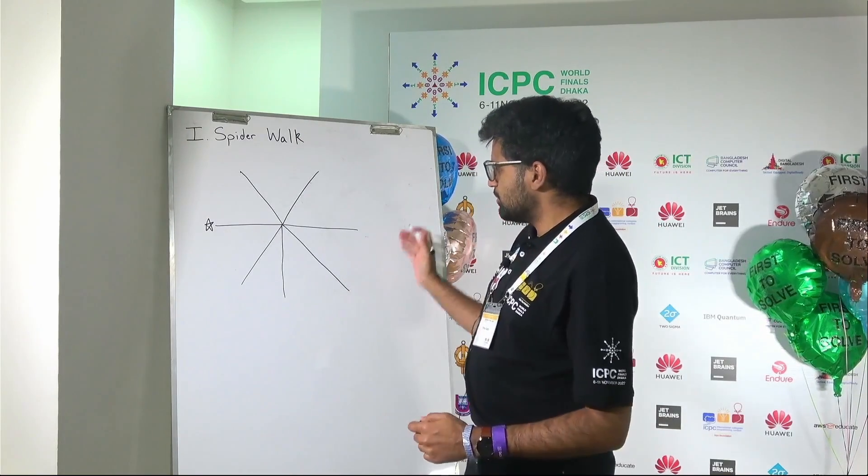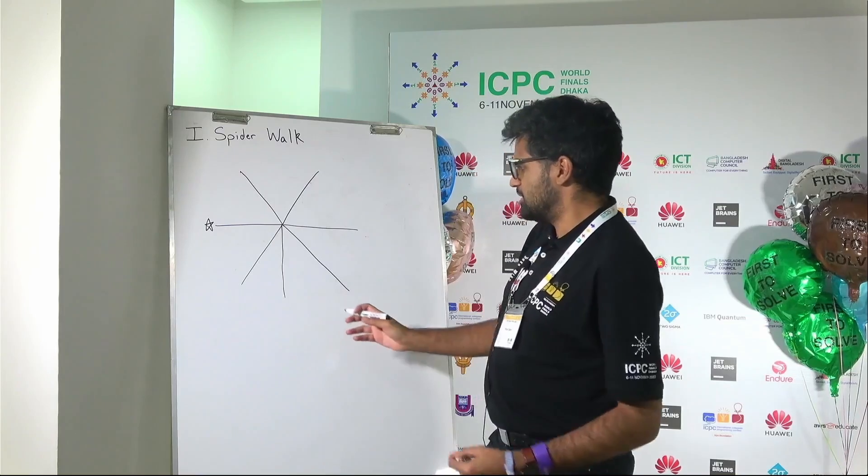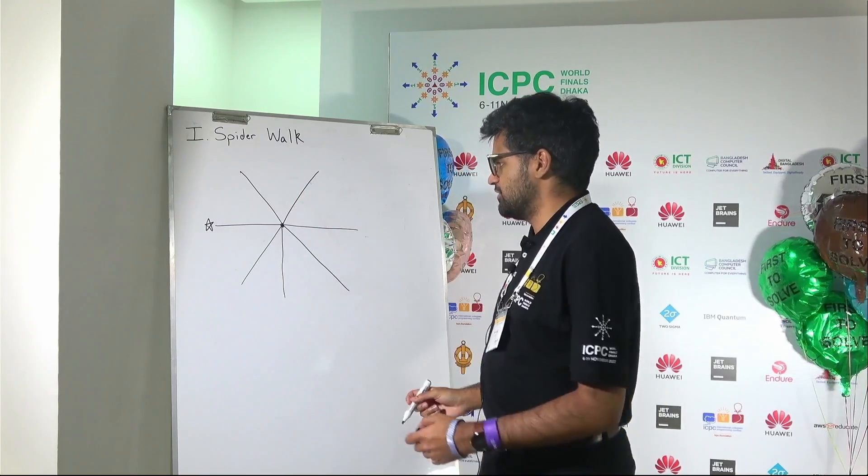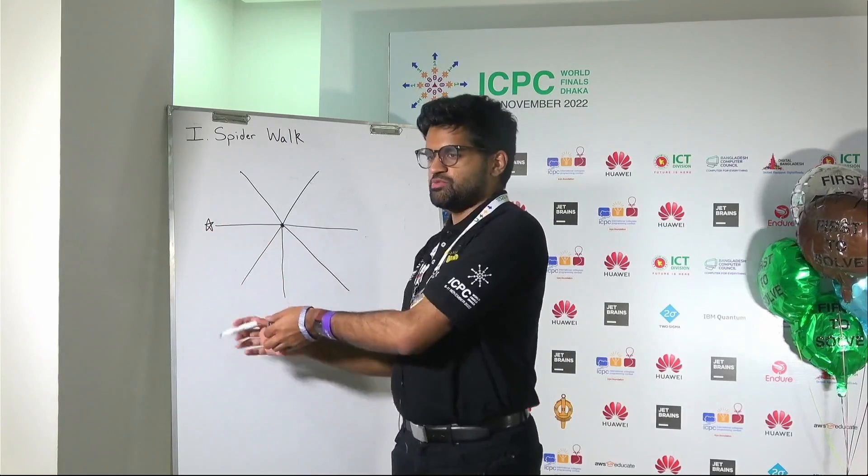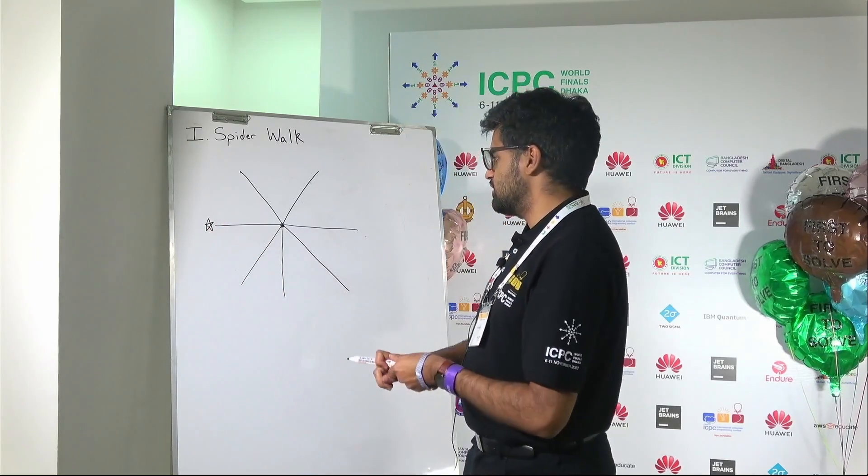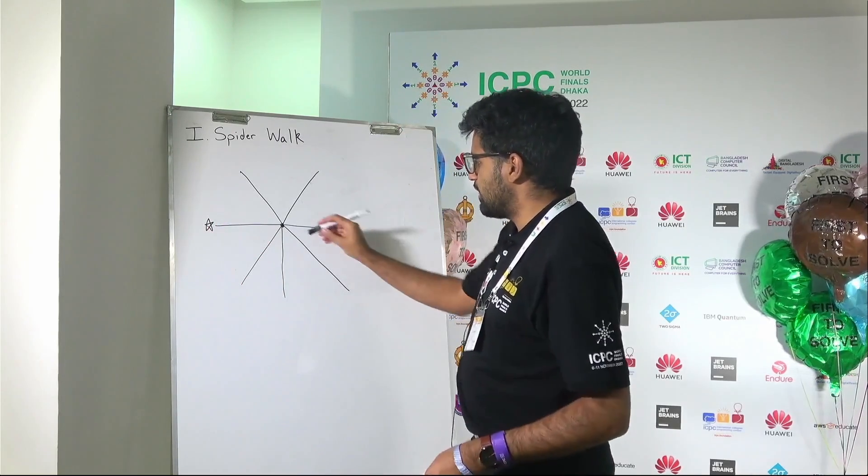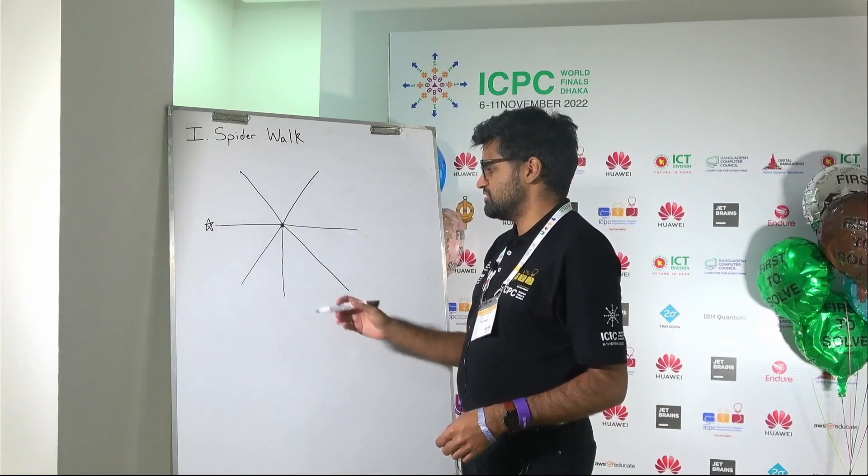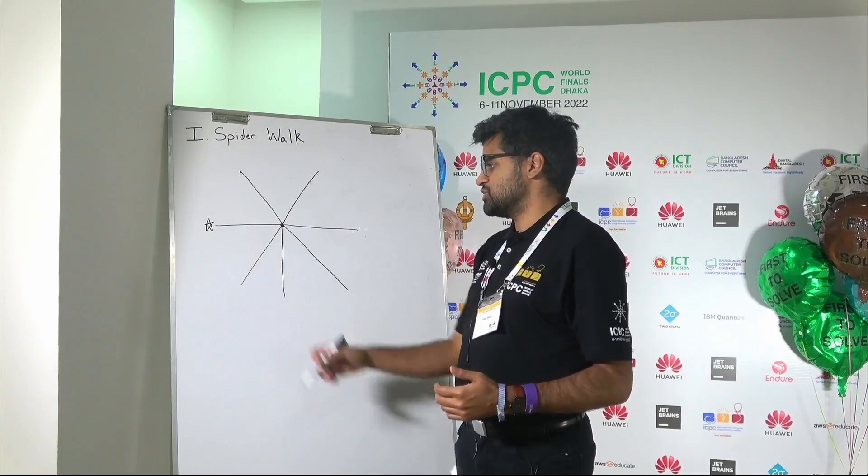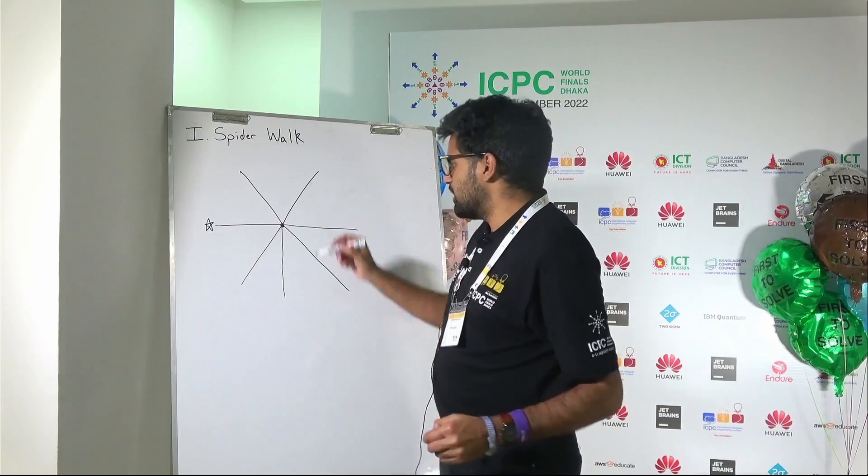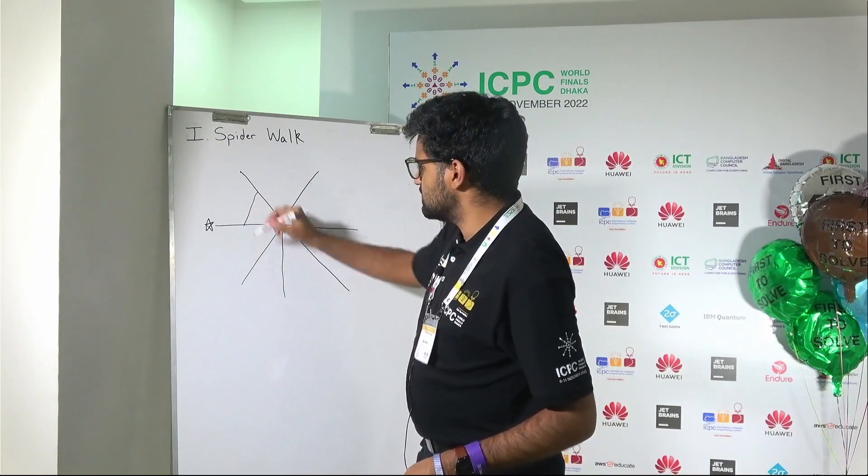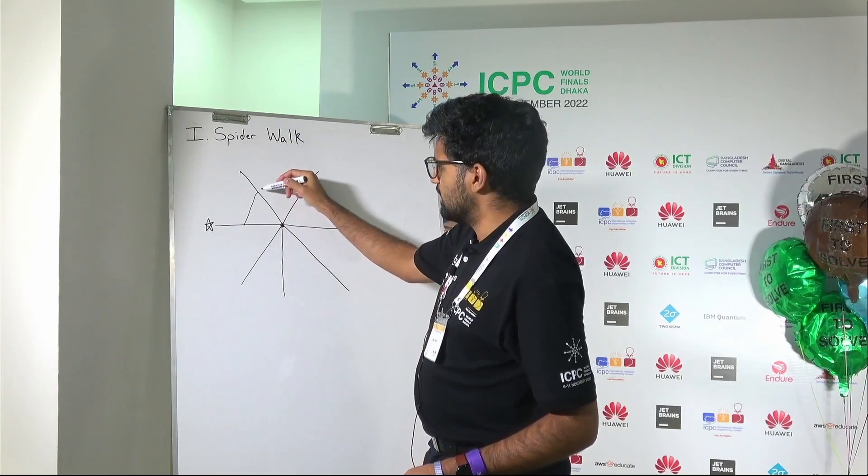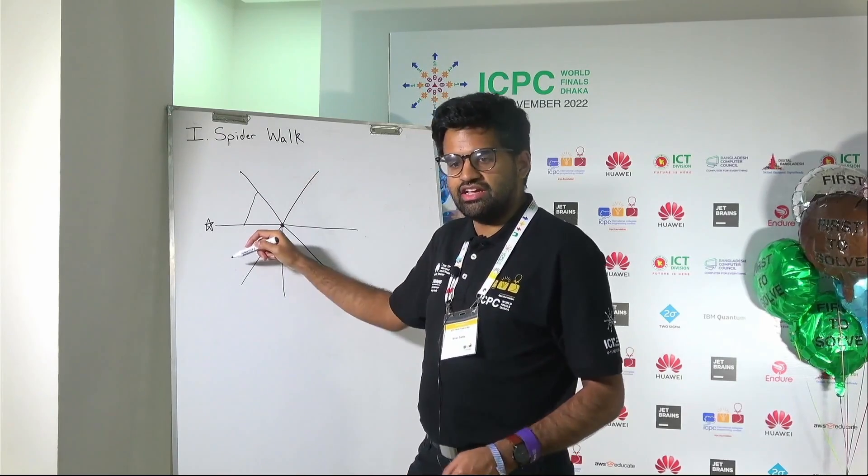So in this problem you're given this spider web, which can be thought of as a series of strands emanating from some spider center. There's some favorite strand for our spider named Charlotte and she wants to know for every possible starting strand what's the minimum number of bridges she needs to add to end up at the specific strand. Whenever a bridge is present in the spider web, if she walks along that strand and encounters the bridge she must take it.